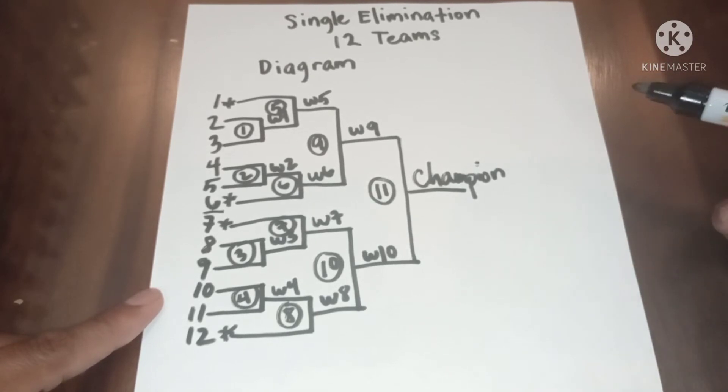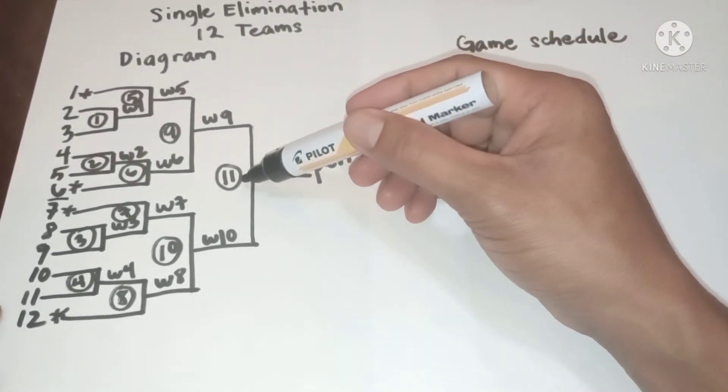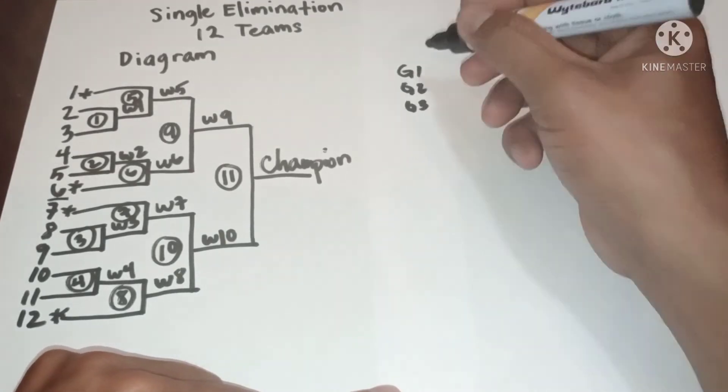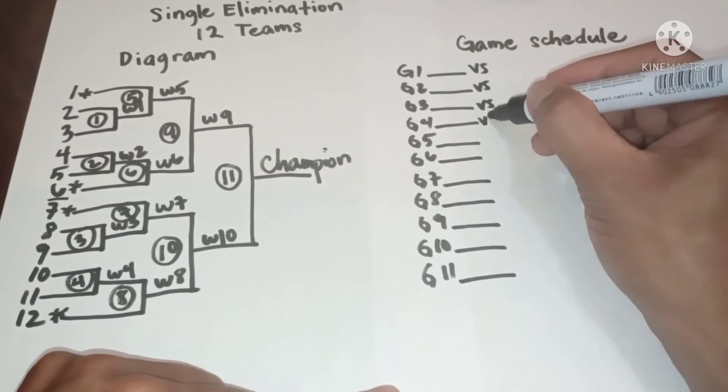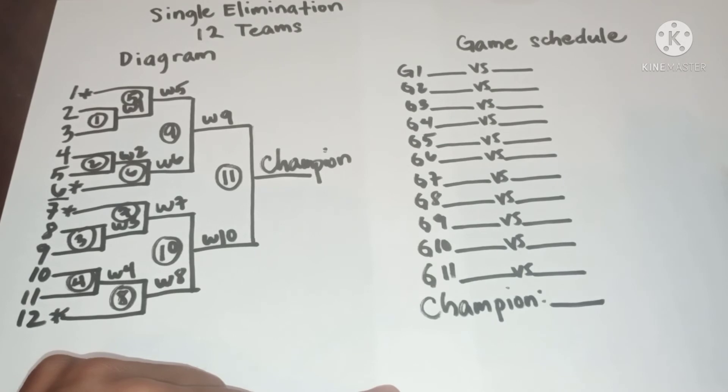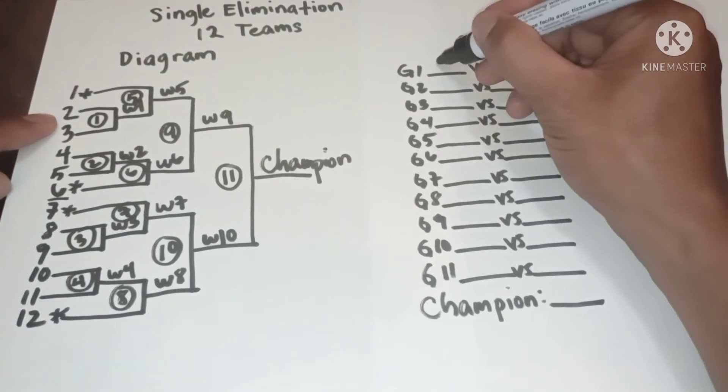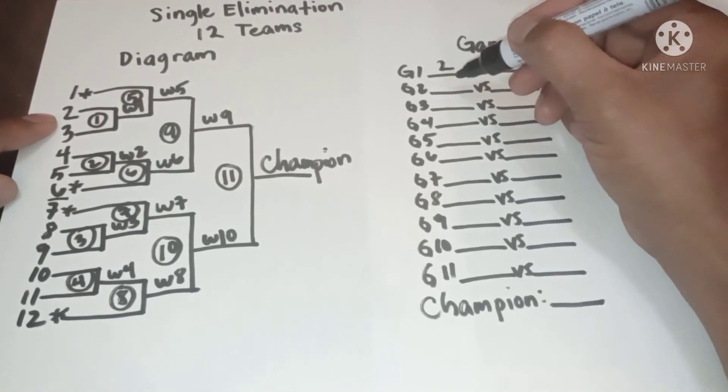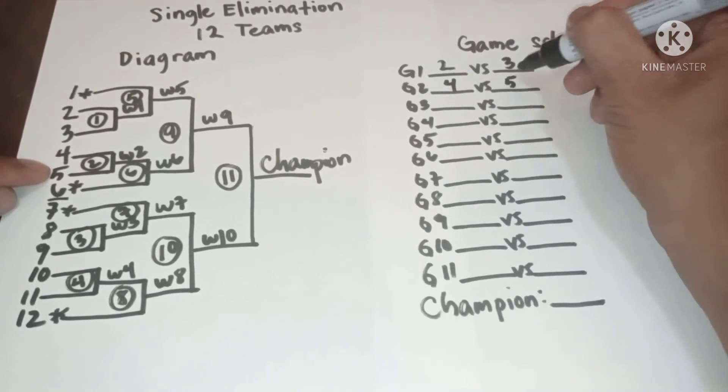Now let us proceed to game schedule. Since we have 11 games, now let us interpret the diagram. In game 1, we have 2 versus 3. In game 2, we have 4 versus 5.